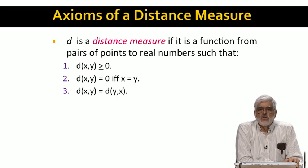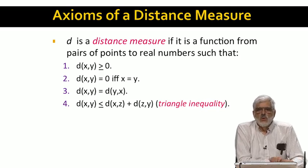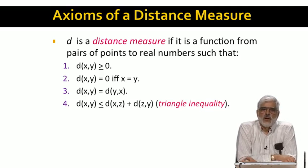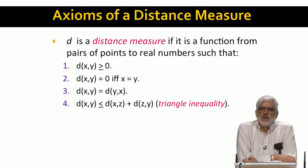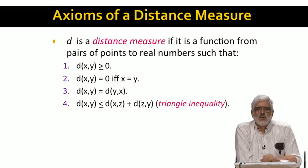The distance is symmetric — that is, the distance from x to y is the same as the distance from y to x. And most importantly, the function must satisfy the triangle inequality. That is, the distance from x to y cannot be greater than the sum of the distance going first from x to some other point z, and then from z to y. We often see this as the observation that one side of a triangle cannot be longer than the sum of the lengths of the other two sides.